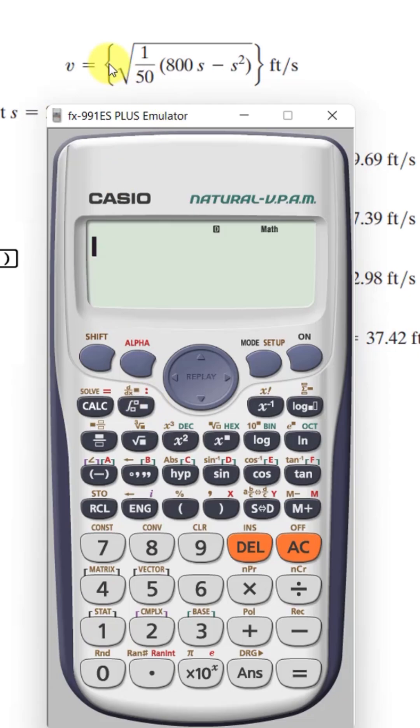After that we have to enter this function of velocity, so that will be square root and 1 divided by 50, brackets 800.